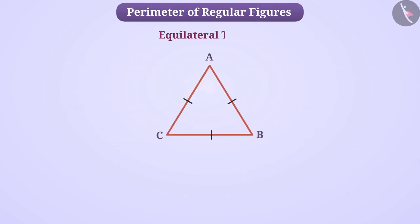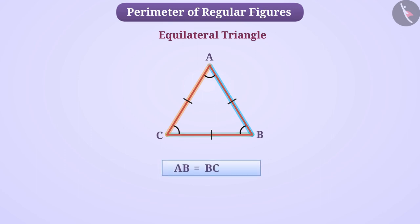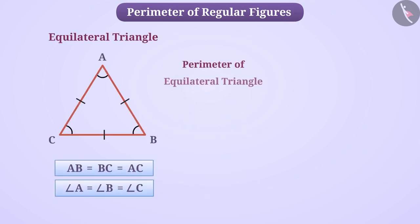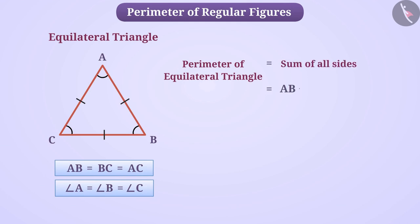Now, look at this equilateral triangle ABC. In this, all sides and all angles are equal. That is, AB is equal to BC is equal to AC, and angle A is equal to angle B is equal to angle C. Let us find its perimeter. The perimeter of an equilateral triangle is equal to the sum of all sides — that is, AB plus BC plus AC. But in this case, the lengths of all the sides are equal, so we can write AB instead of BC and AC.